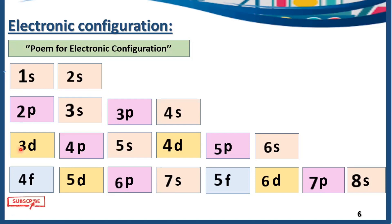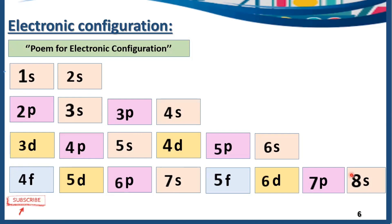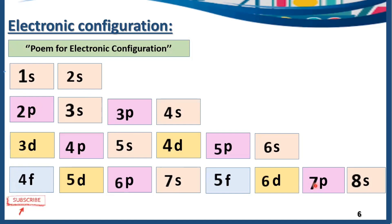The pattern is: S, S (repeated twice), then PS and PS repeated twice, then DPS repeated twice, then FDPS repeated twice. So the full pattern is: SS, PSPS, DPSDPS, FDPSFDPS. If you don't want to memorize the poem, you can memorize it this way also.